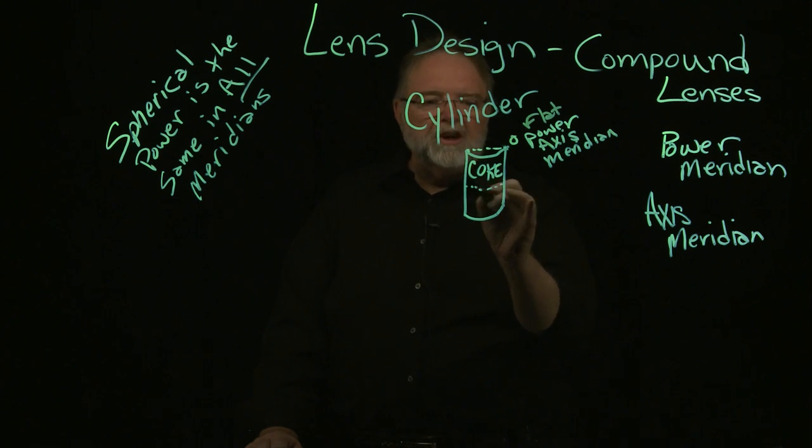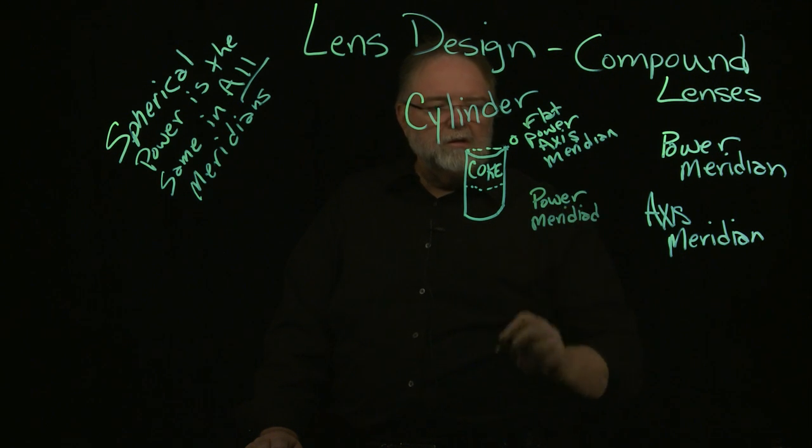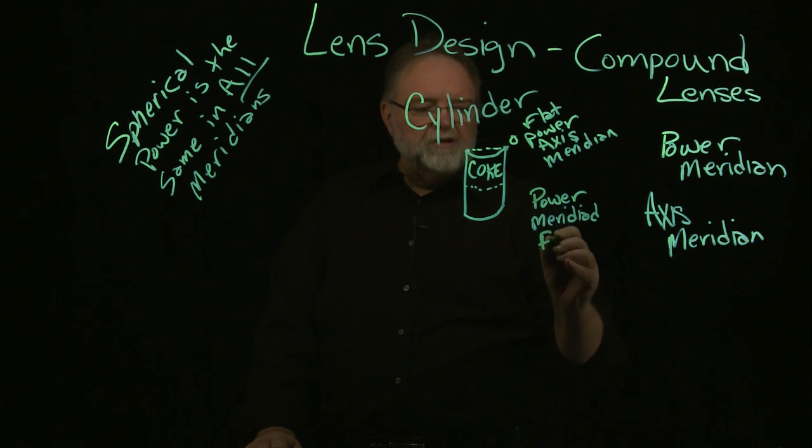Around the other meridian that's 90 degrees away from it is called the power meridian. And it has the full power of the lens.